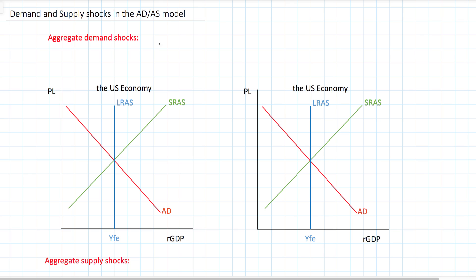Let's start with the definition of demand shocks. A positive demand shock occurs anytime there is an increase in aggregate demand resulting from an increase in either consumption, investment, government spending, or net exports.